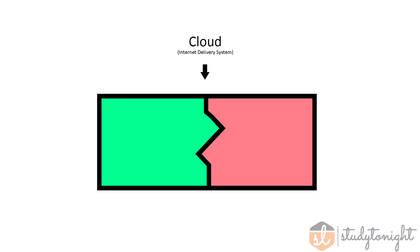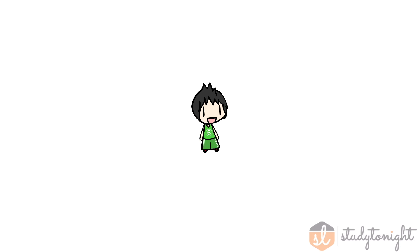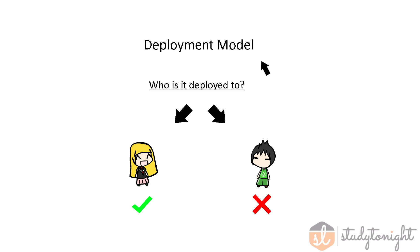Any cloud or internet delivery system is defined by two key parts: the deployment model and the service model. These two come together to define the accessibility and the functionality of the cloud. The deployment model, as you might guess from the name, defines who the cloud system is deployed to — that means it tells the cloud who can access it and who can't.